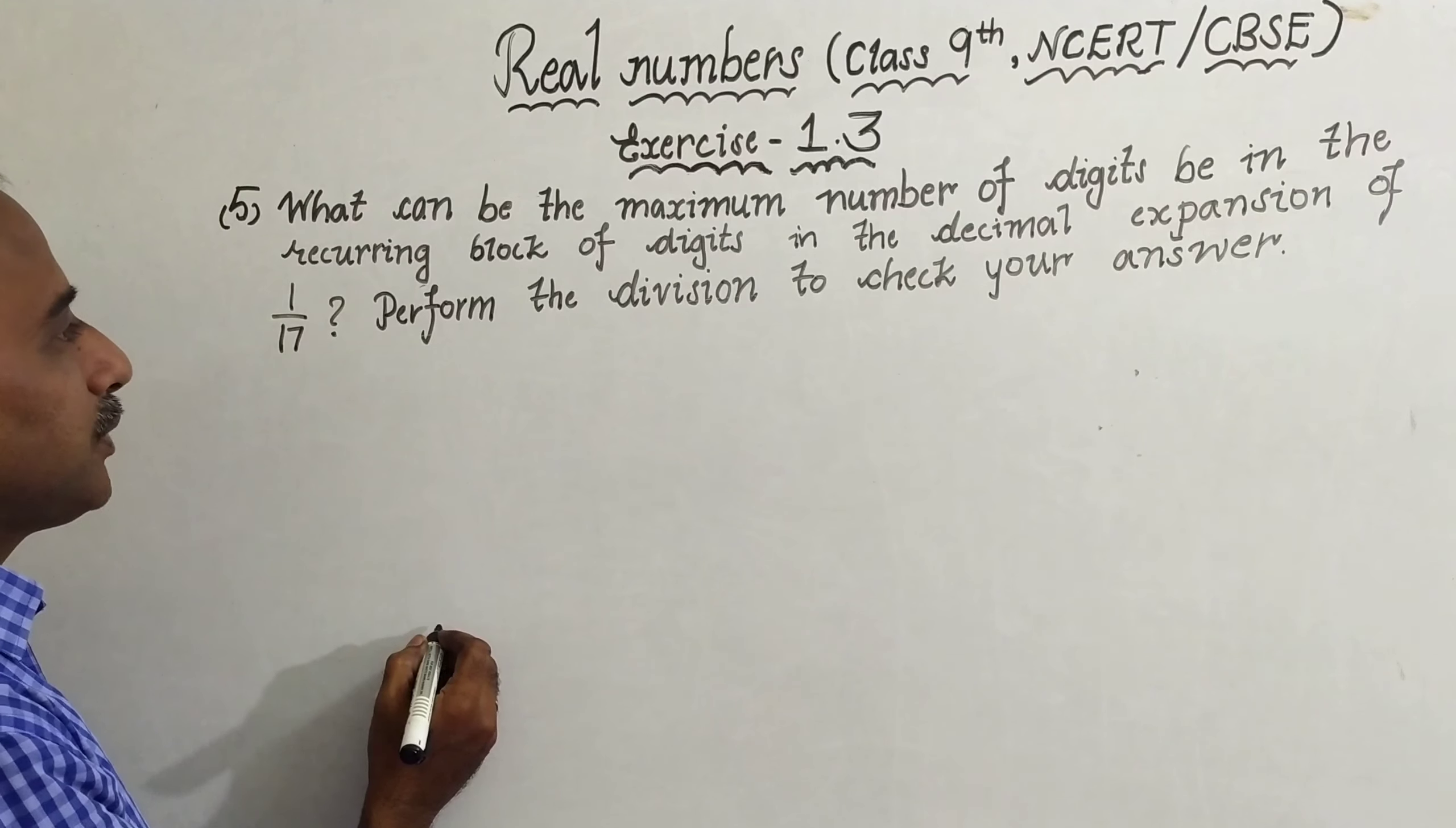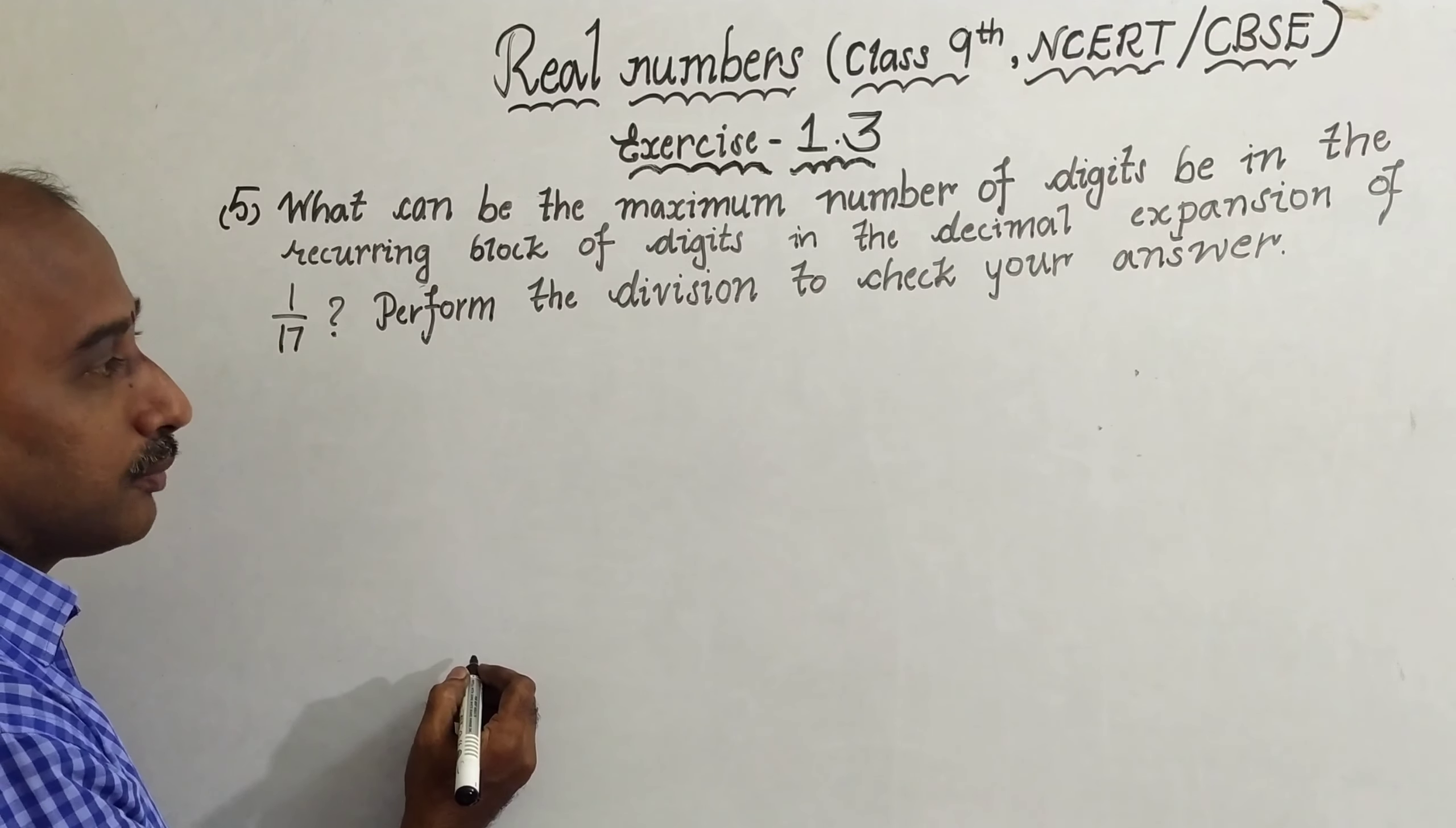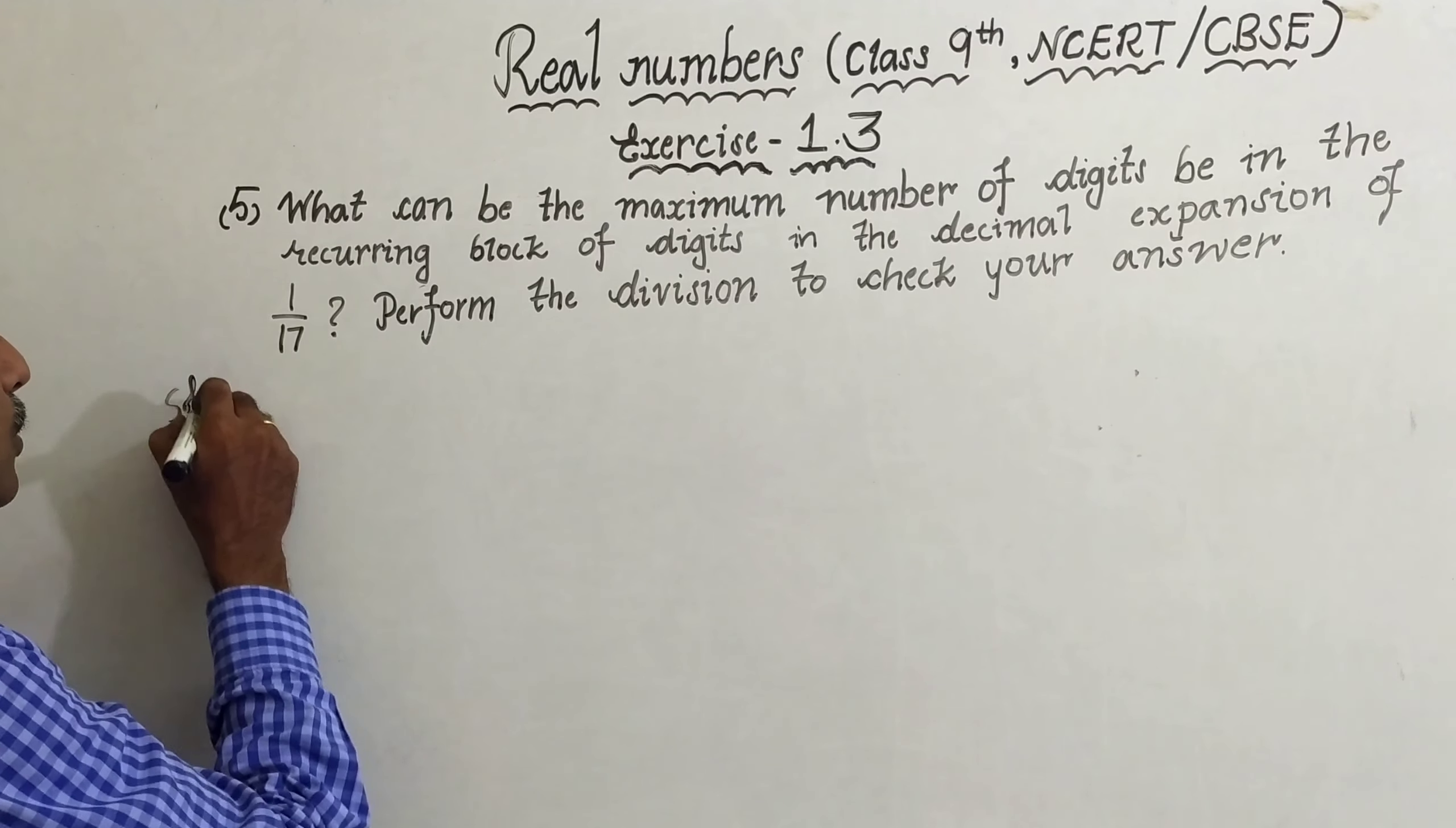Question number five: What can be the maximum number of digits in the recurring block of digits in the decimal expansion of 1 by 17? Perform the division to check your answer. So come to the solution, we have to divide 1 by 17.